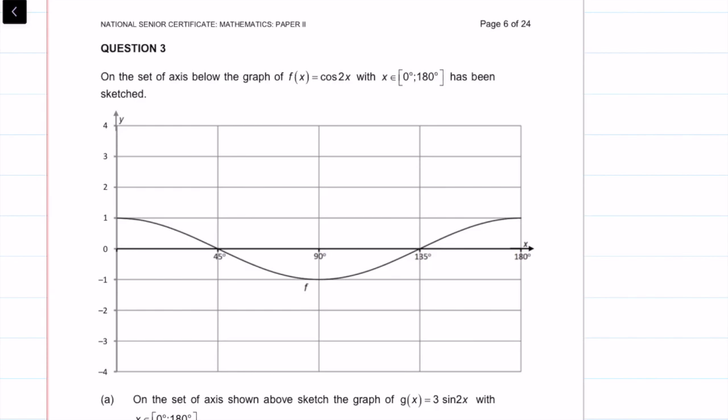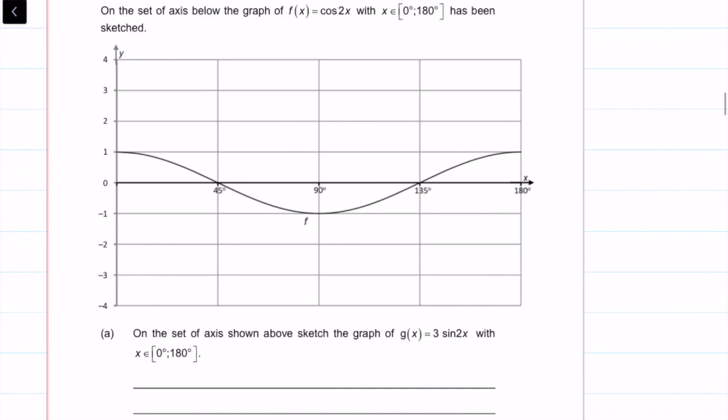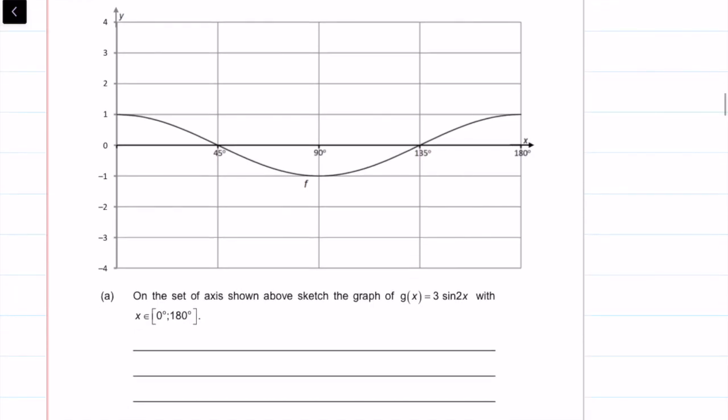On the set of axes below, the graph of f of x equals cos 2x between 0 and 180 degrees has been sketched. So we have a nice graph. Then it says on the set of axes shown above, sketch the graph g of x equals 3 times sin 2x between 0 and 180 degrees.